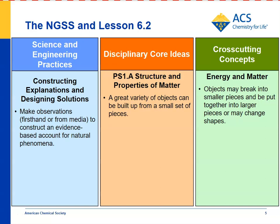For disciplinary core ideas, structure and properties of matter: a great variety of objects can be built up from a small set of pieces. Students have seen this in the last lesson and in this one, 6.2 — that the different molecules of substances can be made from a small number of atoms just rearranged differently. For crosscutting concepts, energy and matter: objects may break into smaller pieces and be put together into larger pieces or may change shape. This is along the same line that these different pieces — snap cubes as models of atoms — can be taken apart and put together in different ways to make different molecules.